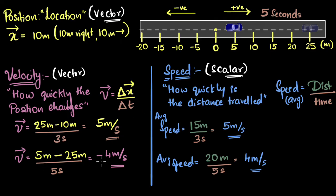Speed and velocity both have the same units — meters per second as the standard unit, or miles per hour in everyday life. The big difference is: when it comes to velocity, we care about how much the position has changed. For example, if the car started here, went over there, and then came back to the same position, the change in position is zero — so velocity shows no change in position. But for speed, it doesn't matter where the initial and final position are; all that matters is how much distance you traveled. Distance is like the odometer reading in your car — that number keeps going up. So the distance traveled in a round trip would not be zero. Velocity is a vector quantity — direction matters — but for speed, direction doesn't matter.